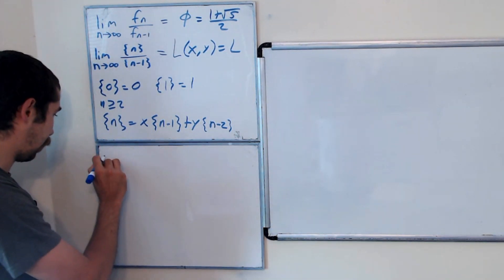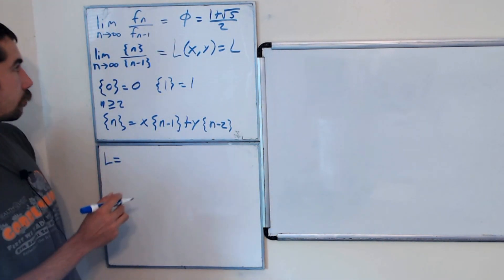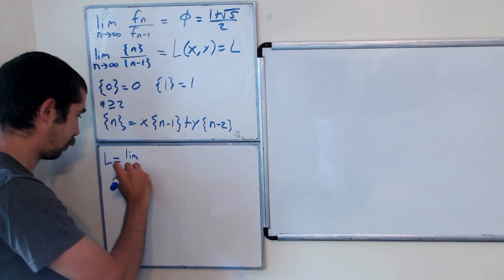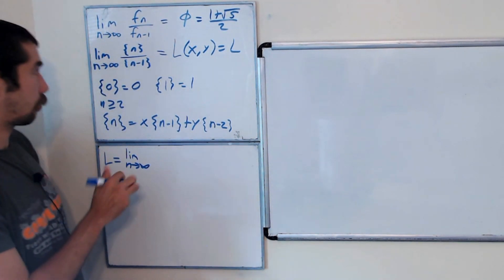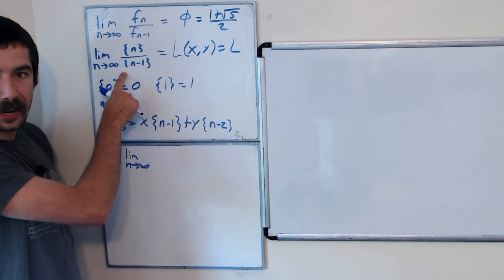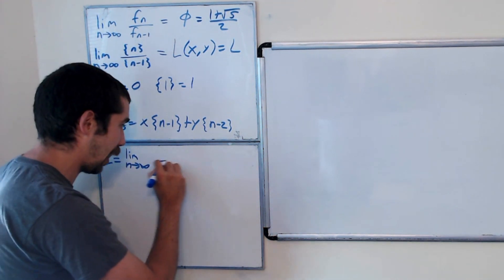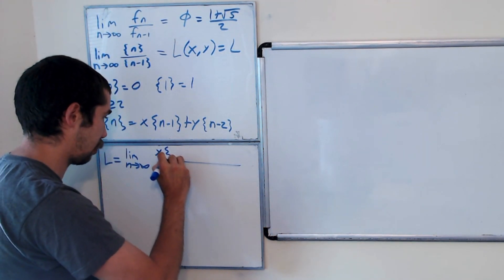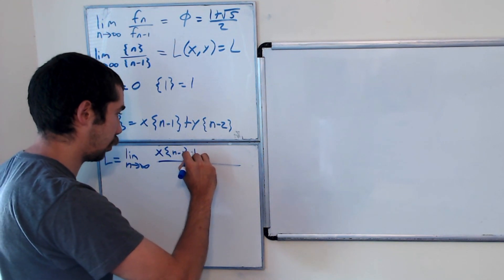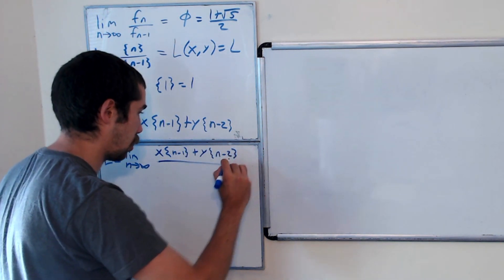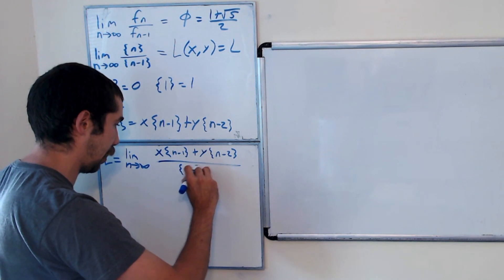So let's see if we can figure out L. L is equal to the limit as n goes to infinity of bracket n over bracket n minus 1. Well, bracket n is x bracket n minus 1 plus y bracket n minus 2, and it's all over bracket n minus 1.